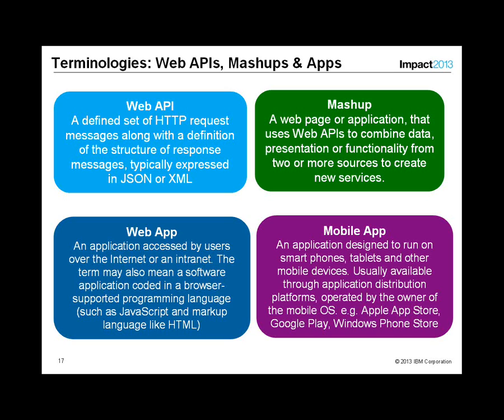A web API is defined as a set of HTTP request messages along with the definition of the structure of the response messages. What's typical about a web API is it's either expressed in JSON or XML. The protocol is HTTP, the payload is either JSON or XML — those are the key ingredients of a web API.